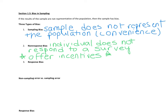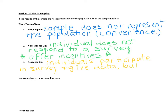Finally, we have response bias. Response bias happens when we have a good sample and the individuals are participating, but for some reason they give data that is false. So individuals participate in the survey and give data, but the data is false. That one's more complicated, so we're going to focus a lot on response bias and explore why the data is false.